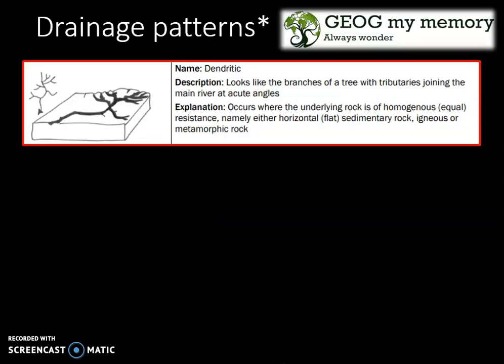The first example is the dendritic drainage pattern. Here it looks like branches of a tree, with tributaries joining the main river at acute angles. It occurs where the underlying rock is of equal resistance, namely either horizontal sedimentary rock, igneous rock, or metamorphic rock.